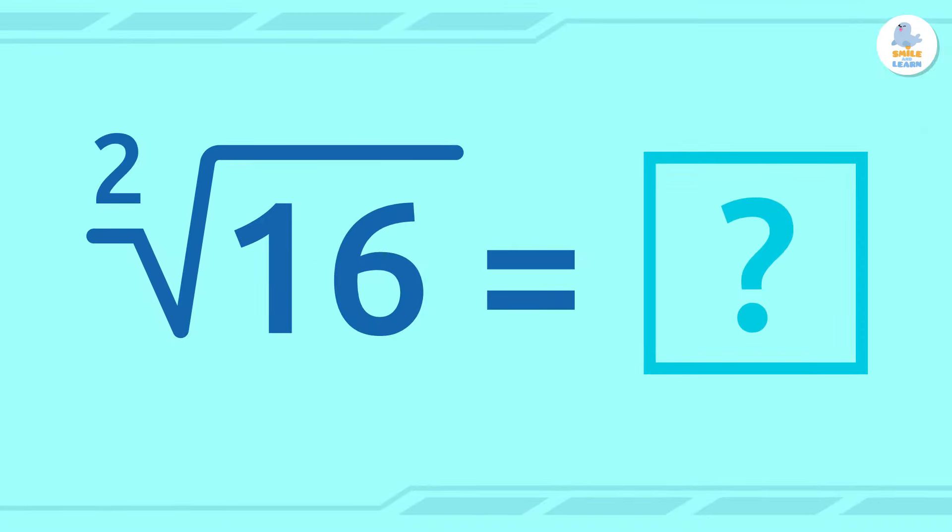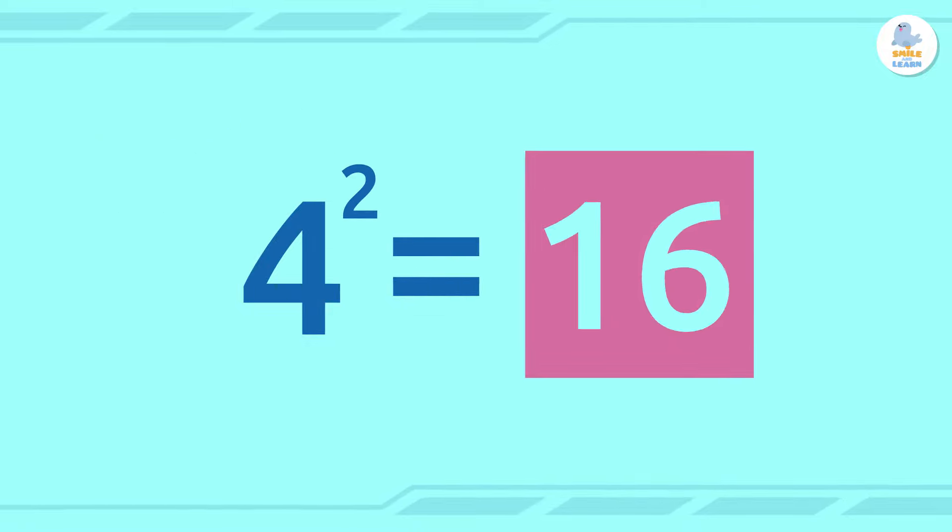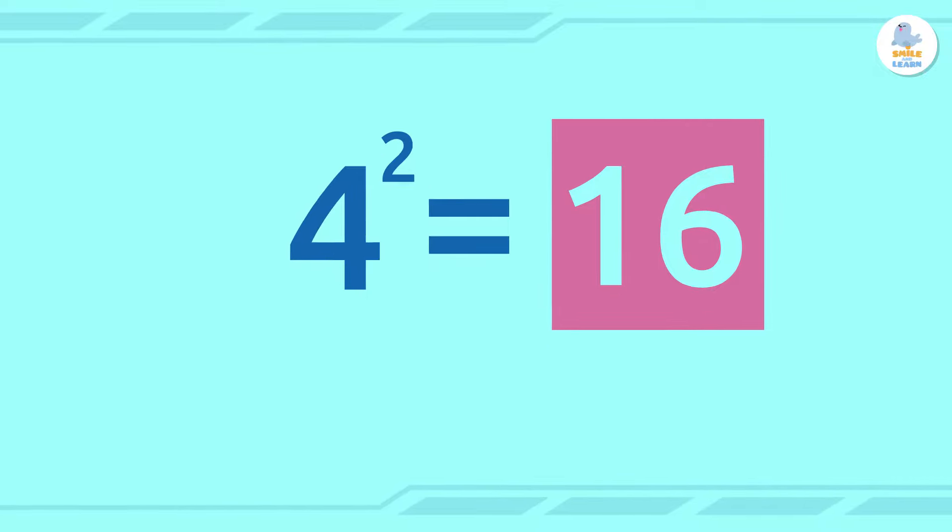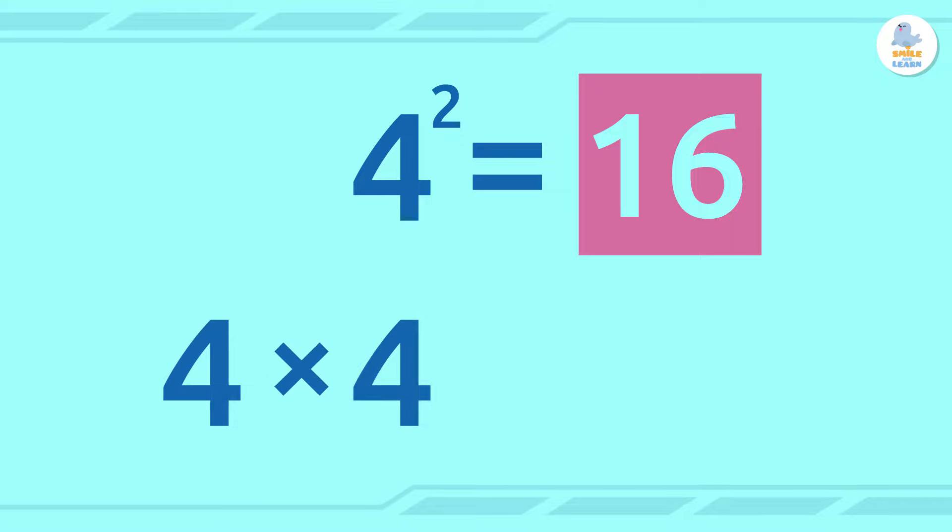In our example, the number we're looking for is the number 4. It's 4 because 4 squared is 16, the number we started with. Let's check it. If we multiply 4 by itself, or 4 times 4, the product is 16.